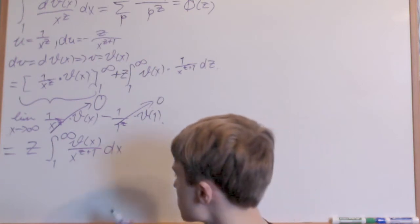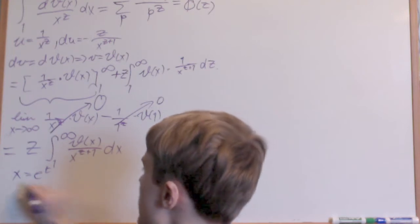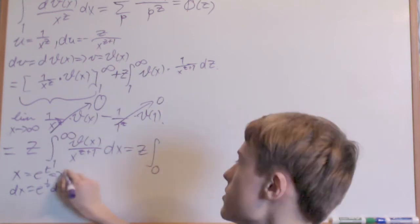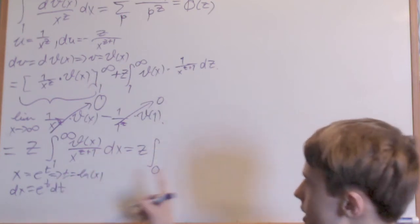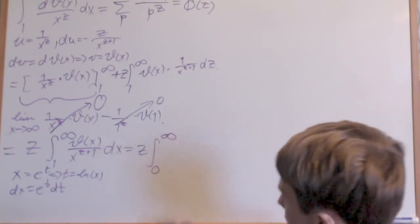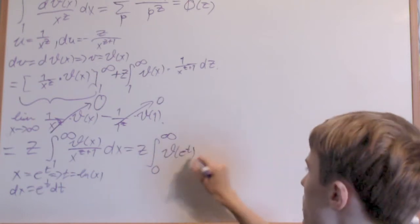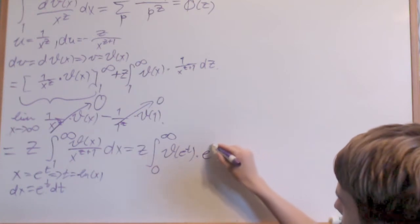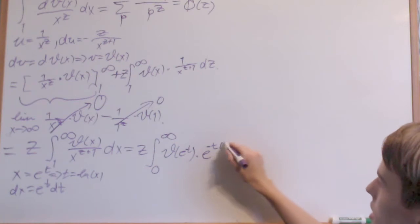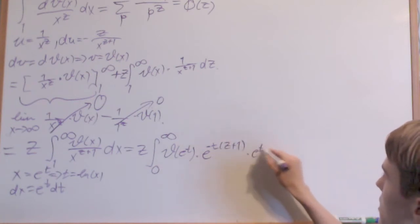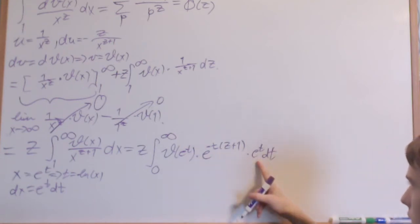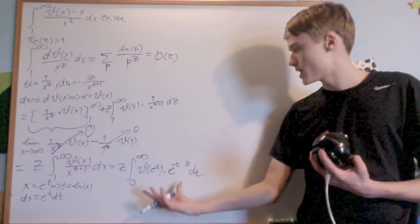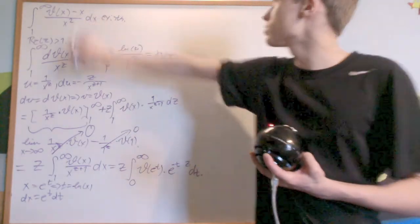Now I'm going to make a substitution — let x equal e to the t, so dx is e to the t dt. The limits go from t equals 0 to infinity. This becomes z times the integral from 0 to infinity of theta of e to the t, times e to the minus t times z plus 1, times e to the t dt. The e to the t from dx cancels with the plus 1 in the exponent, simplifying the integral nicely.